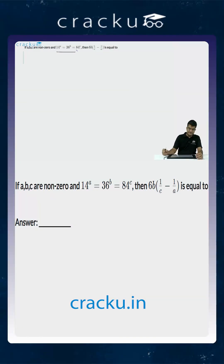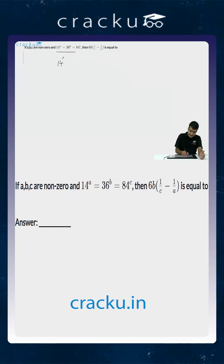In this question, we are given an equation. We are told that 14 to the power of A is equal to 36 to the power B, which is equal to 84 to the power C.